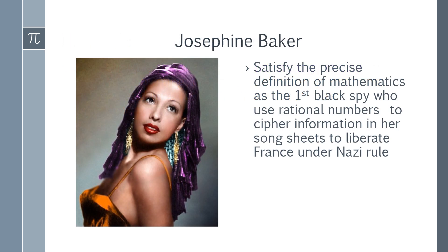This beautiful lady is Miss Josephine Baker. She was born in America first, during the early 1900s, and she died, I mean, was born in St. Louis, Missouri, and then she died in France 1975. She used her rational numbers to cipher information in her song sheets to liberate France under Nazi rule.